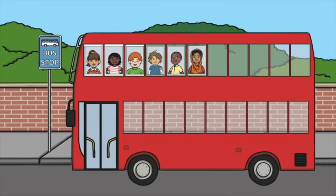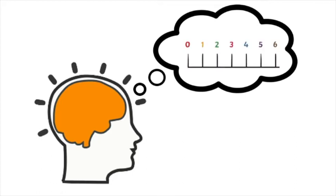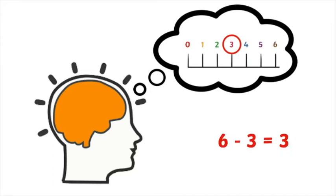First there were six passengers on the bus. Then three passengers hopped off. Now how many passengers are there? Three. Six take away three equals three. Imagine a number line in your head — start at six and count back three: one, two, three. Six take away three equals three.